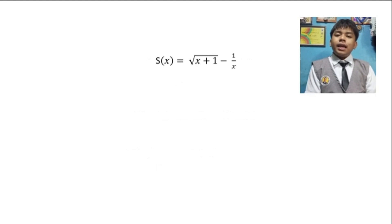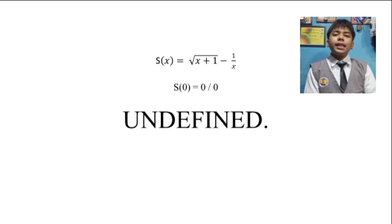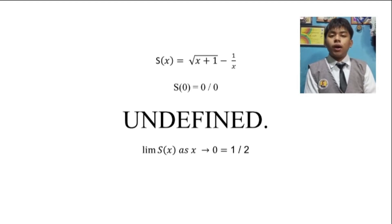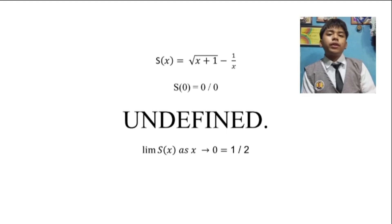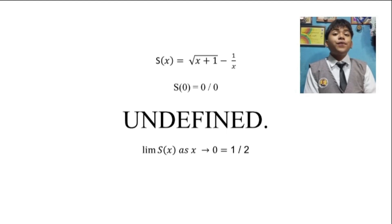Another example: the function s of x equals the square root of x plus 1 minus 1 over x. If given x equals 0, through direct substitution we get the square root of 0 plus 1 minus 1 over 0, which is 0 over 0 — indeterminate. To get the limit of s of x as x approaches 0, we factor the function to get 1 over the square root of x plus 1 plus 1, and evaluating gives 1 over the square root of 0 plus 1 plus 1, which equals 1 half. This is another reason why the limit of f of x is not equal to f of c when f of c is indeterminate.